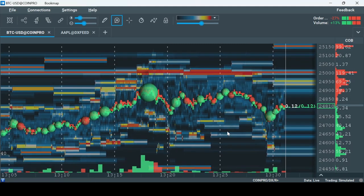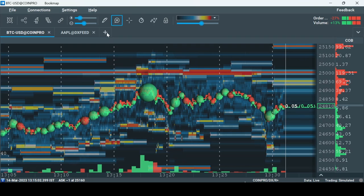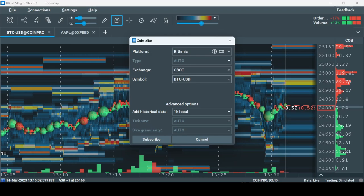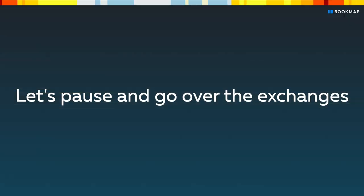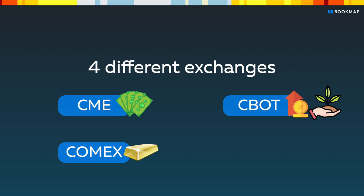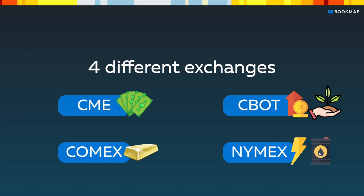Now the connection is established. The next step is to add an instrument. Click plus to add an instrument and choose RYTHMIC under the platform, then choose the relevant exchange. There are four different exchanges to choose from: CME for indexes and currencies, COMEX for metals, CBOT for interest rates and agriculture, and NYMEX for energy. Make sure you choose the right one for the instrument you are looking for. For more details, please check the link in the description.